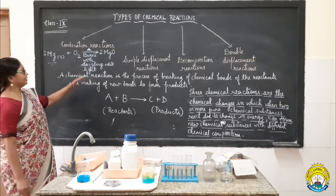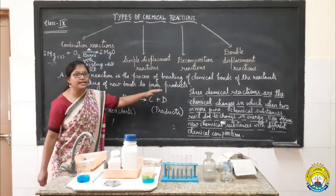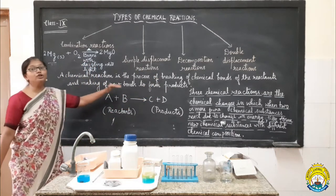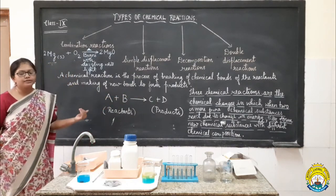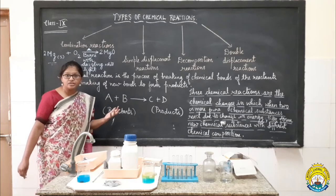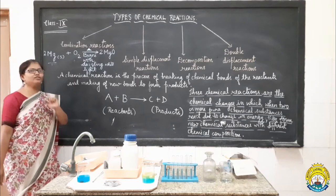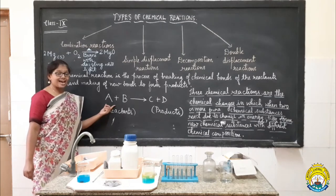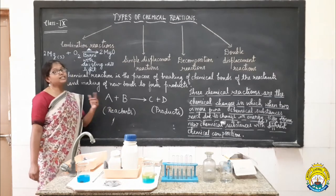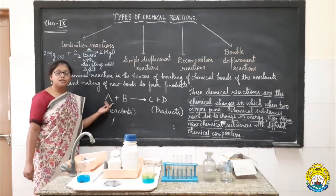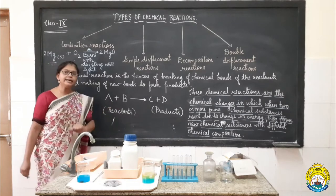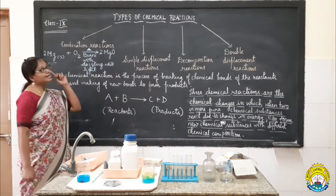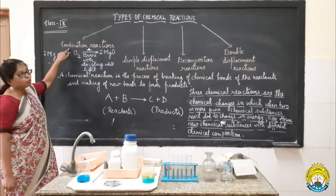A chemical reaction is the process of breaking of chemical bonds present in the reactants and making of new bonds of the product. So naturally it requires an appreciable energy change, and also it takes place in more than one way. In some cases the reactants involved can be pure elements, and in other cases the reactants can be two pure compounds. So depending upon which type of reactants are participating, we can categorize chemical reactions into four categories.